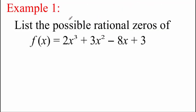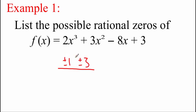In this first example, we're just going to list out all of the possible zeros — we're not going to do the synthetic division to find the ones that actually work. Setting up our fraction, on top we look at those p values: factors of the constant term, which is 3. That gives us plus or minus 1 and plus or minus 3. For the q values on the bottom, we look at our leading coefficient, which is 2, giving us plus or minus 1 and plus or minus 2.